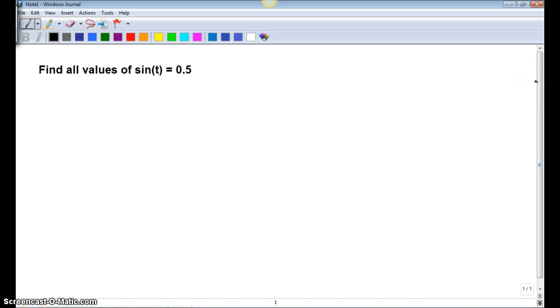A lot of you got half the credit, and I'll explain where it came from, but I want to go through the problem so everyone knows how to solve a problem like this entirely. The key here is we're not just finding sine t equals 0.5, we are finding all values of sine t equals 0.5.